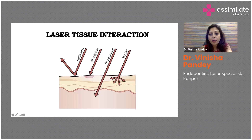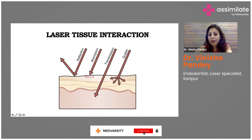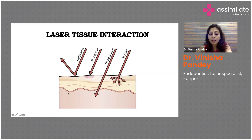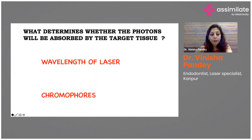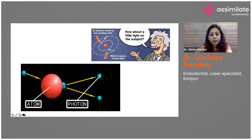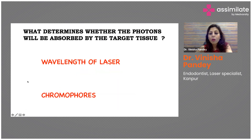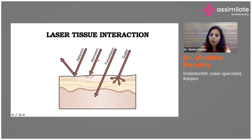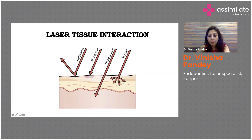Laser-tissue interaction: when tissue interacts with the laser, the laser light can be absorbed, transmitted, scattered, or reflected back. What is the ideal laser-tissue interaction desired? We will see in the following slides. Due to stimulated and spontaneous emission, there are biological effects on the tissue, which can include absorption — we need absorption. We need some reflection also, though that is not entirely in our hands because it is light. We need transmission, and there is some amount of scattering for therapeutic effects.